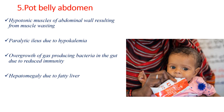Another finding in malnourished patients is a huge abdomen or pot belly abdomen, caused by different reasons. First is hypotonic muscles of the abdominal wall resulting from muscle wasting, causing distension of the abdomen. Other causes include paralytic ileus due to hypokalemia, overgrowth of gas-producing bacteria in the gut due to reduced immunity, and hepatomegaly due to fatty liver — all predisposing to a big pot belly abdomen.